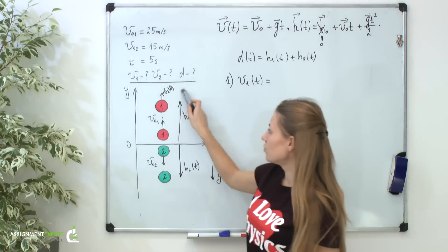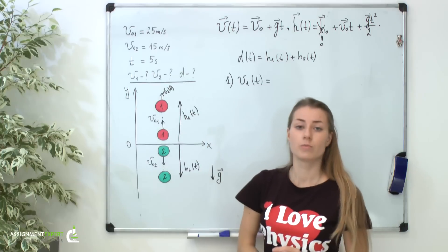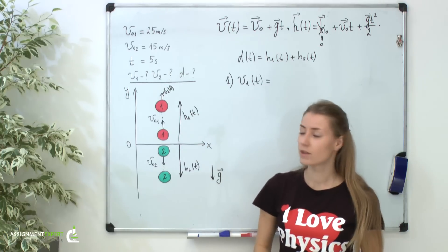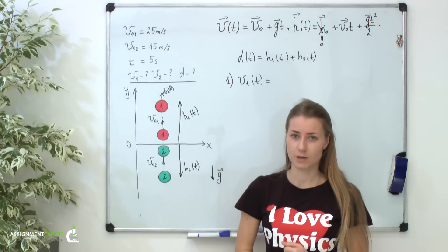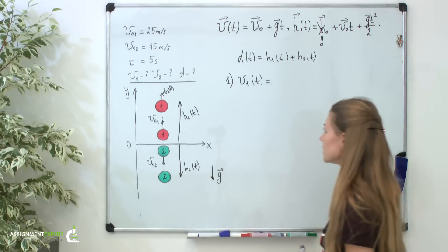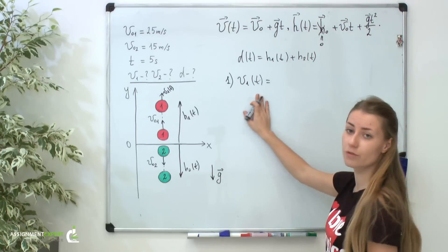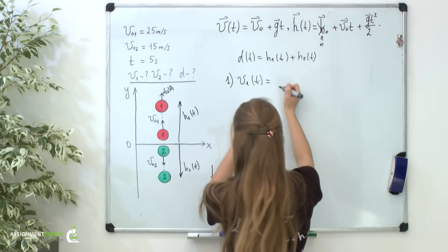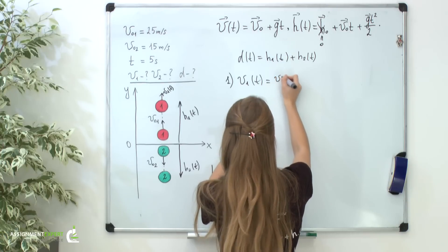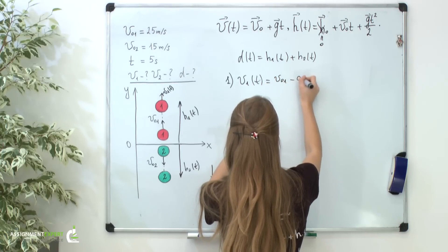If we are wrong in choosing this direction after numerical calculation, we will get a negative velocity. And it will be a signal for us that we have made a mistake. So, now it is easy to write down the equation for the first velocity: positive v1 of t equals v01 minus gt.